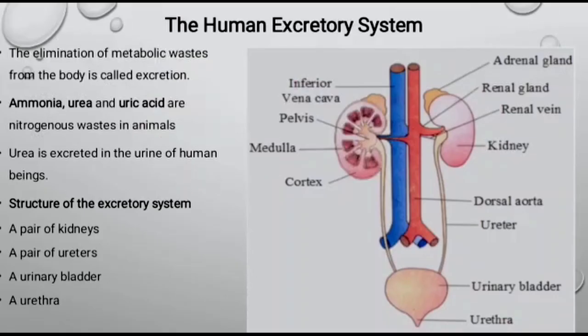Excretion is the process in which the metabolic wastes are eliminated from the body of an organism. Many nitrogen-containing substances, carbon dioxide, certain ions, water, etc. are harmful if they accumulate in the body and therefore they have to be eliminated. Ammonia, urea and uric acid are the major nitrogenous wastes which are harmful for the body of organisms and therefore they are excreted out.